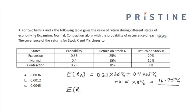Similarly, the return on stock B is equal to 0.35 into 20% plus 0.4 into 12% plus 0.25 into 5%, and that is equal to 14.25%.